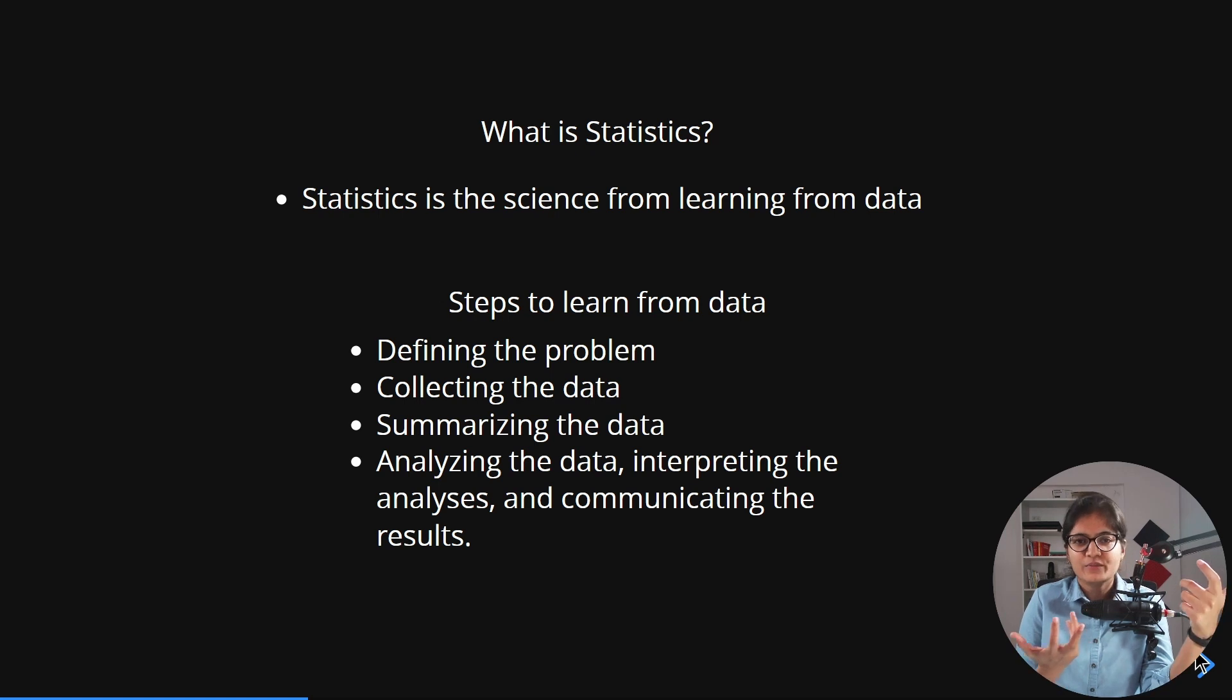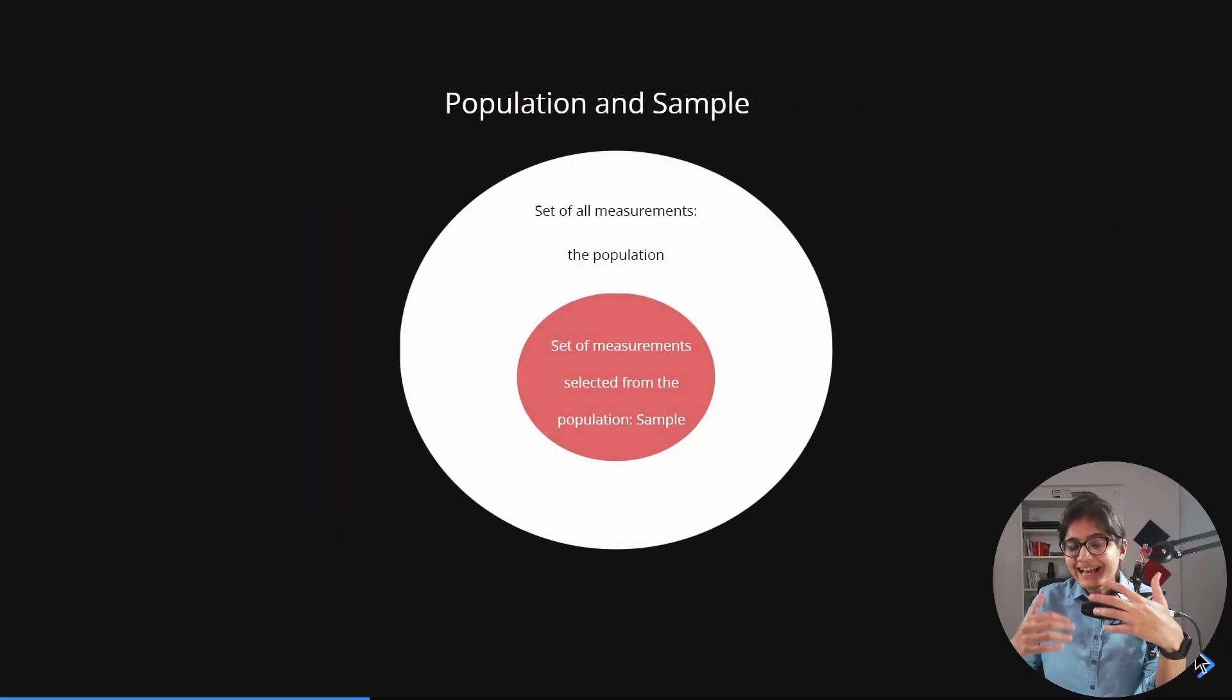In the next upcoming video, we will understand: we have understood that we need to collect the data. Now we will see what are the strategies required to collect the data. There is something which we call population and sample. What is the meaning of population? What is the meaning of sample? What are the different kinds of sampling techniques that we have?